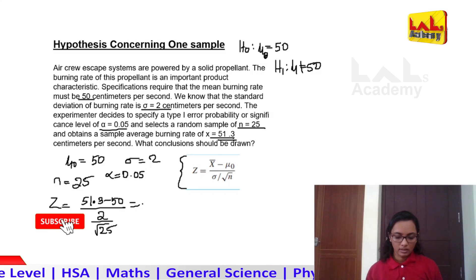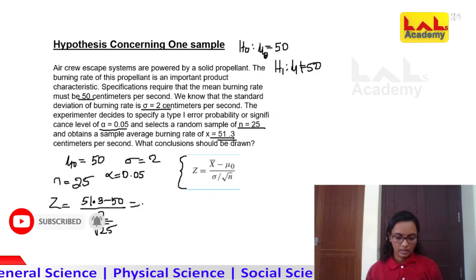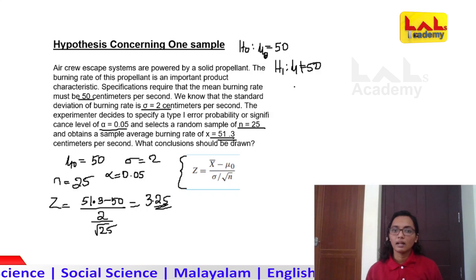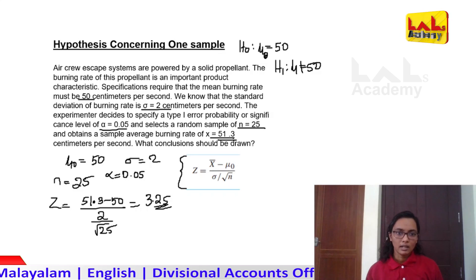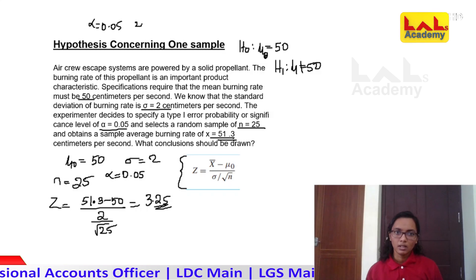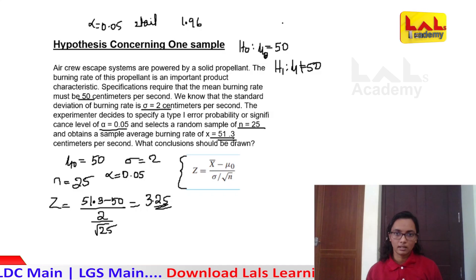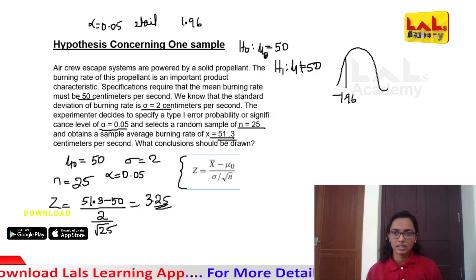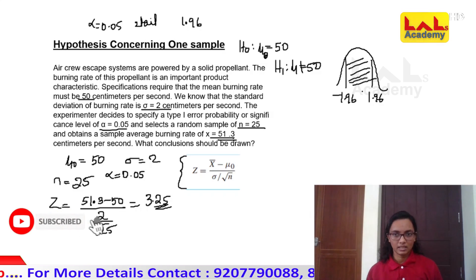The test statistic value is 51.3 minus 50 divided by 2, which comes to approximately 3.25. Since the alternate hypothesis is mu not equal to 50, this is a two-tailed test. With alpha equal to 0.05 for a two-tailed test, the table value is 1.96. The rejection region is z less than minus 1.96 or z greater than 1.96; we accept the null hypothesis only in that range.